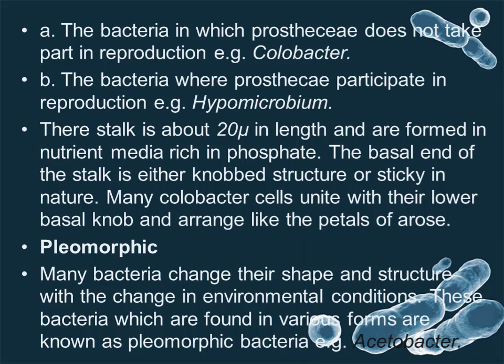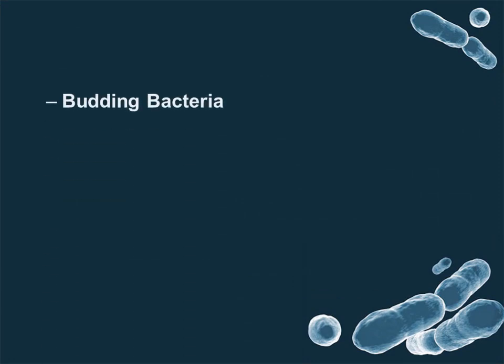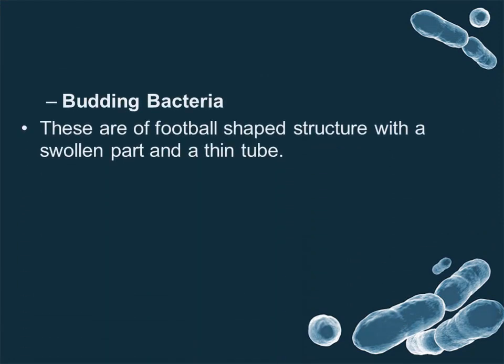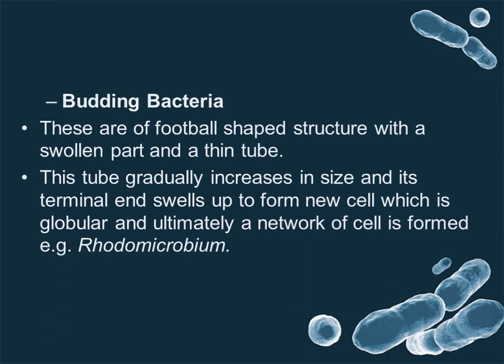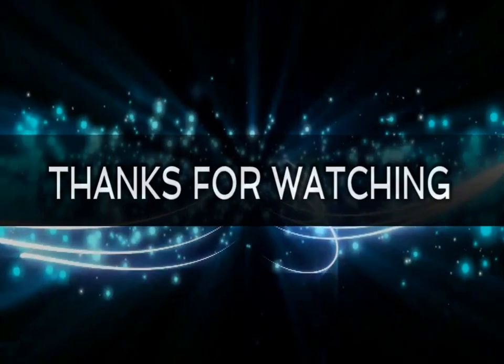Pleomorphic bacteria: many bacteria change their shape and structure with changes in environmental conditions. These bacteria found in various forms are known as pleomorphic bacteria, for example, Acetobacter. Budding bacteria: these are of a football-shaped structure with a swollen part and a thin tube. This tube gradually increases in size and its terminal end swells up to form a new globular cell, ultimately forming a network of cells, for example, Rhodomicrobium. Thanks for watching.